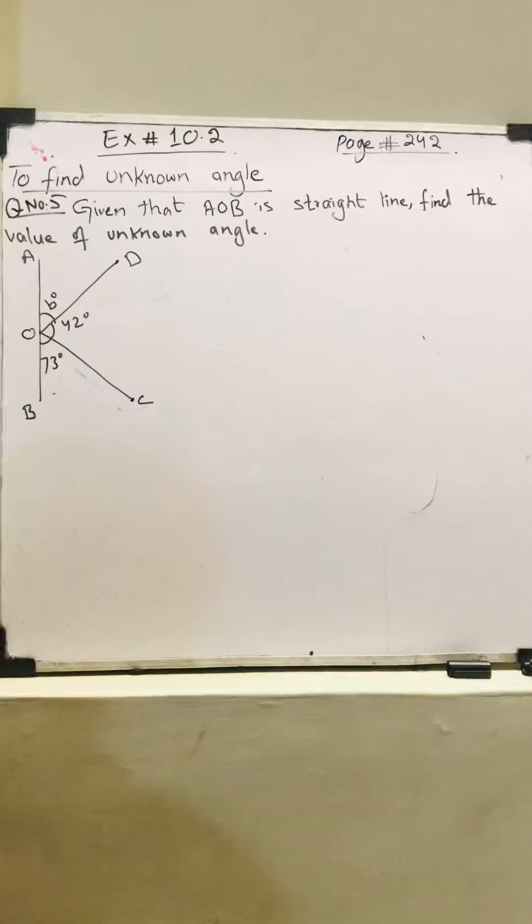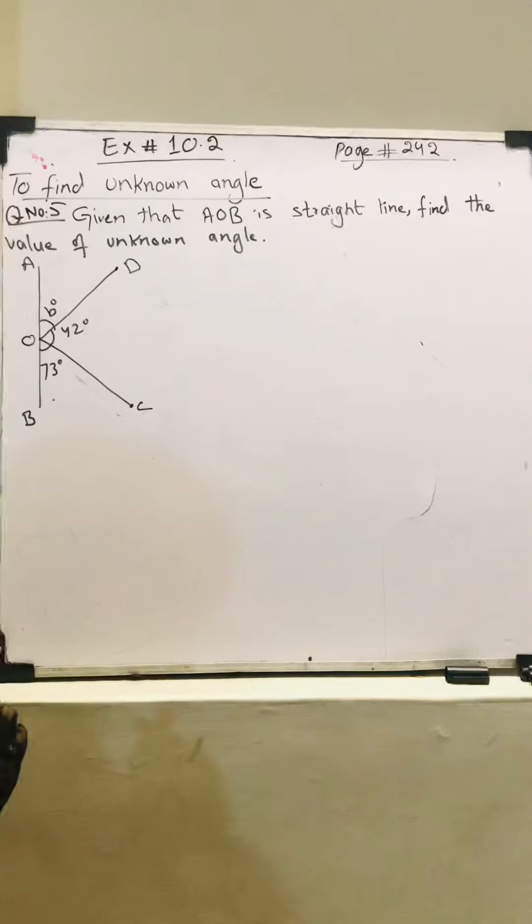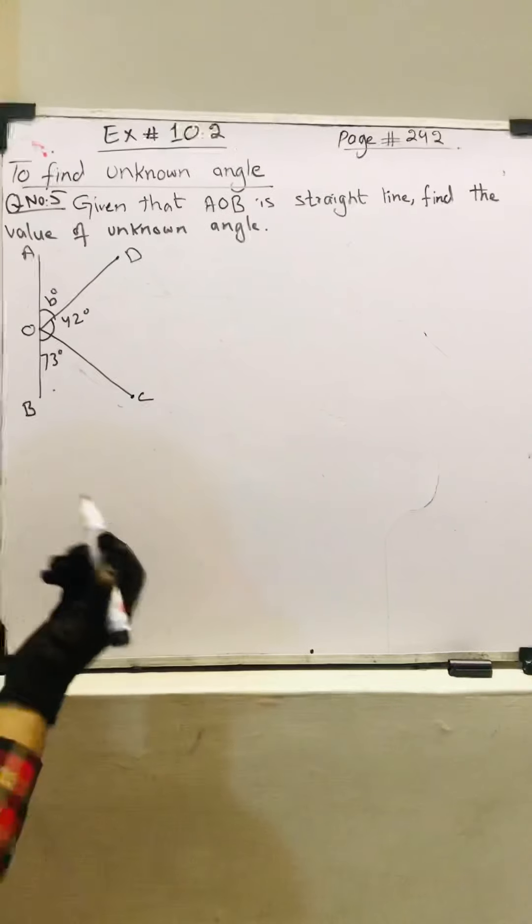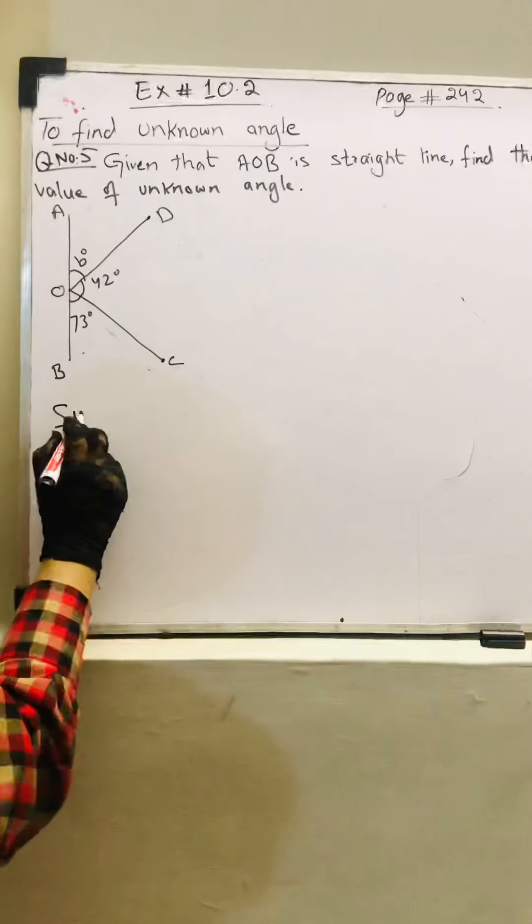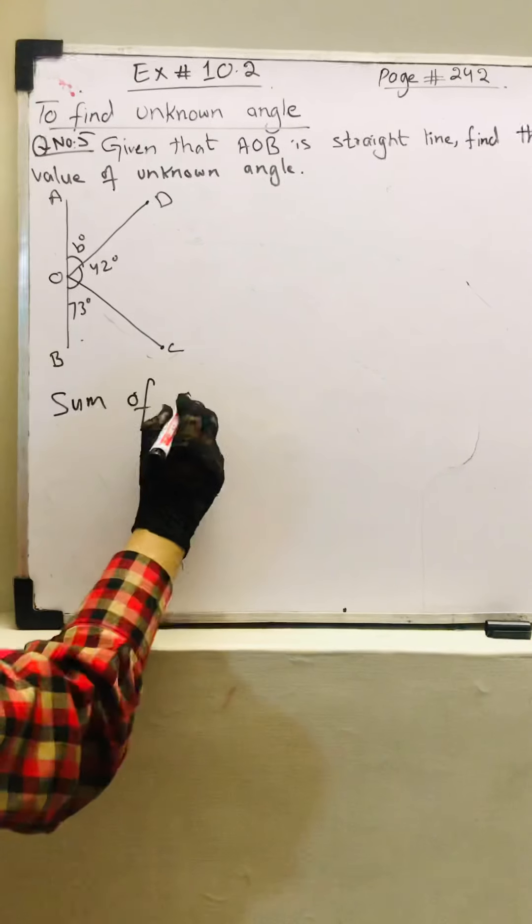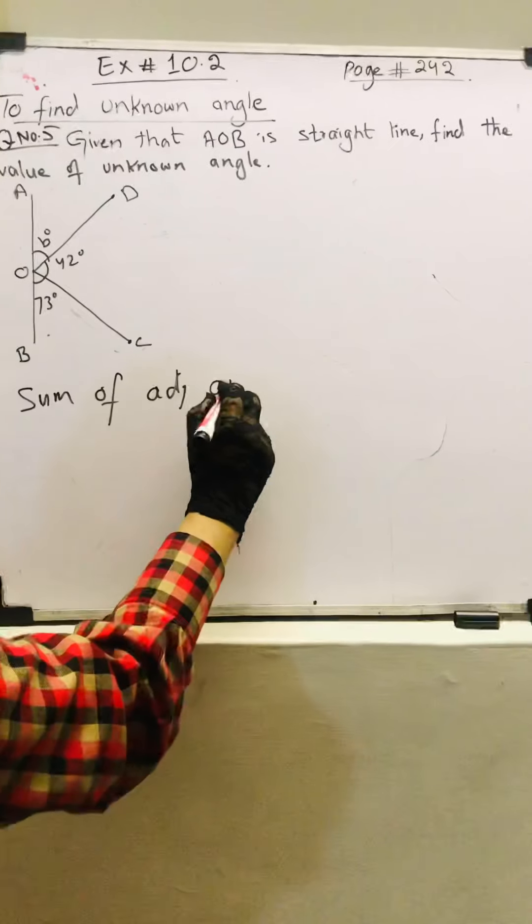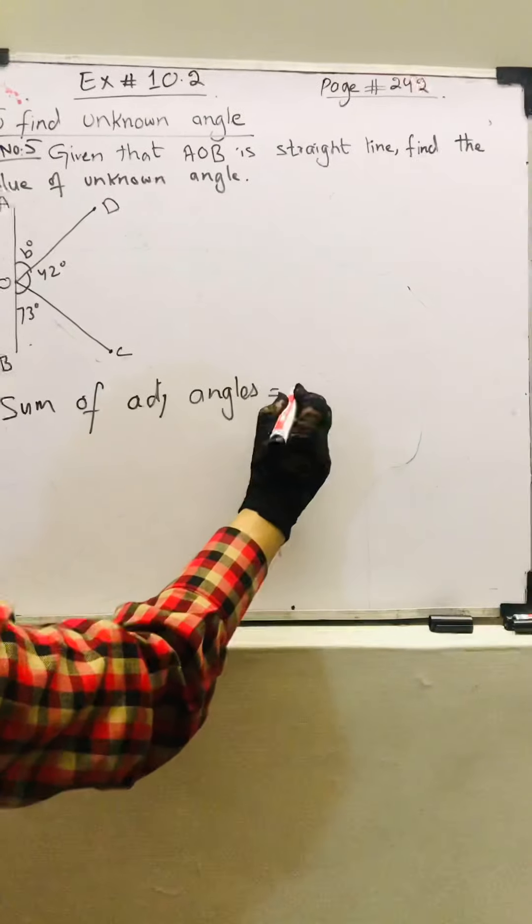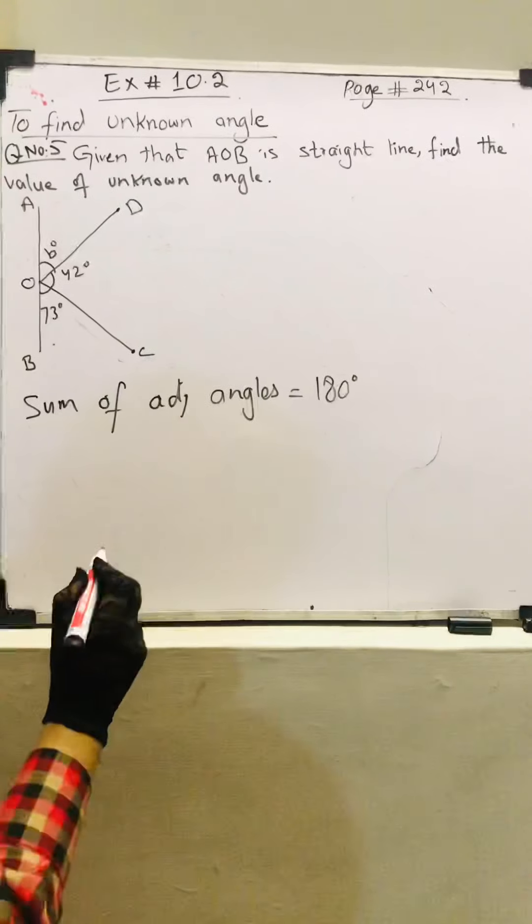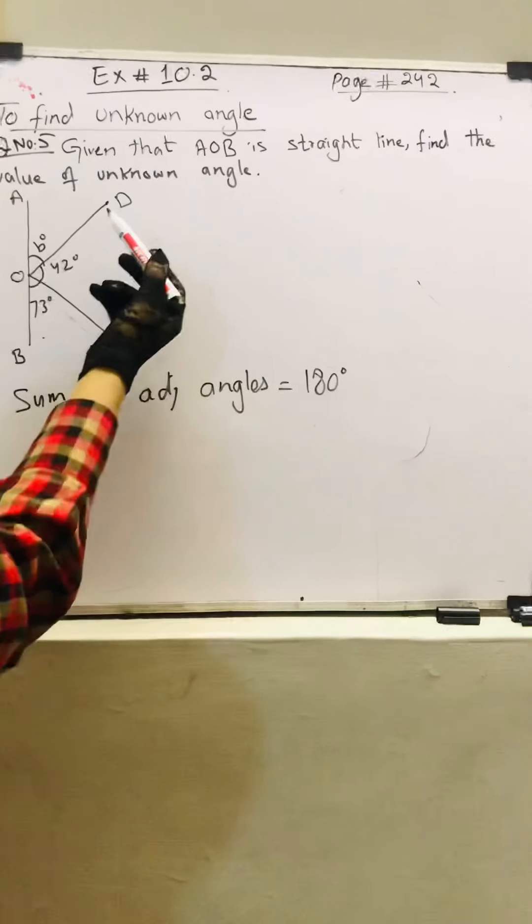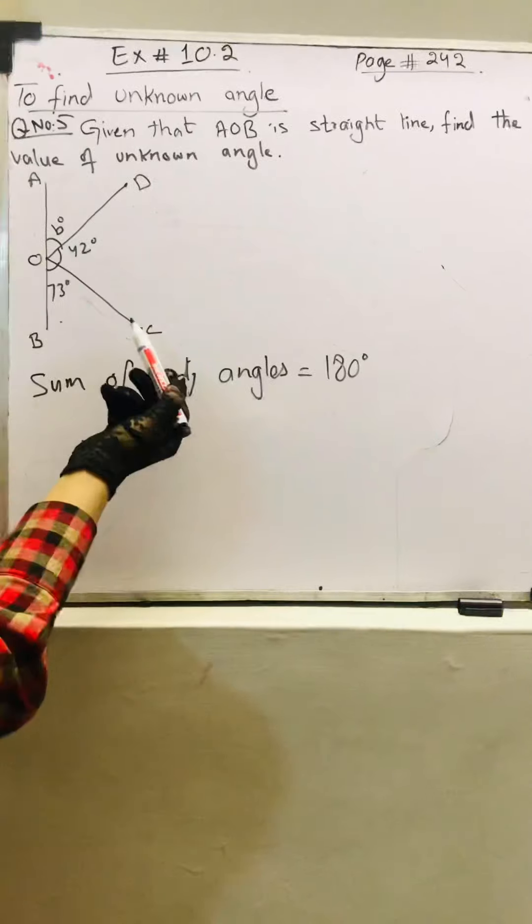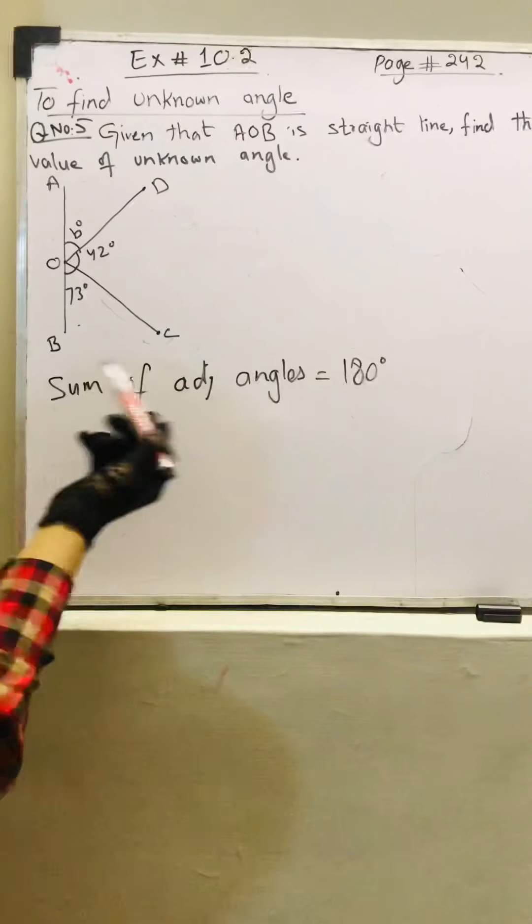It is a formula, so let's apply this formula here. Sum of adjacent angles is equal to 180 degrees. I mean angle AOD plus DOC plus COB is equal to 180 degrees.